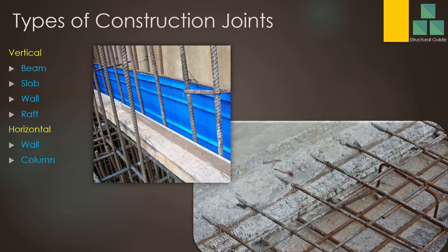We should avoid the horizontal construction joint as much as possible. In special elements like rafts and vaults we may not be able to avoid the horizontal construction joint. In columns also we may not be able to avoid the horizontal construction joint. But in beams and slabs, we should avoid the horizontal construction joint because there can be separation at the planes — not like a vertical joint. Therefore horizontal construction joints should be avoided as much as possible in structural elements like beams, slabs, and foundations.